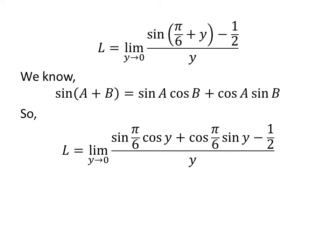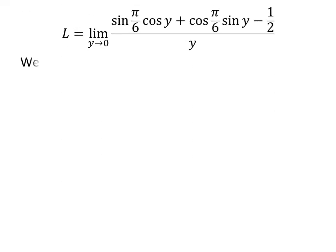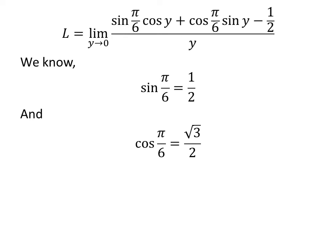Application of the above identity gives us: L is equal to the limit of sine of pi upon 6 times cosine of y, plus cosine of pi upon 6 times sine of y, minus half, upon y, as y approaches 0. We know the value of sine of pi upon 6 is half, and the value of cosine of pi upon 6 is square root of 3 upon 2.